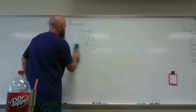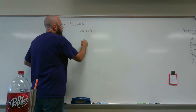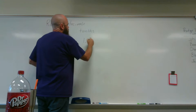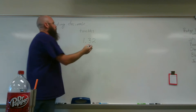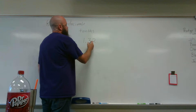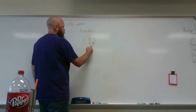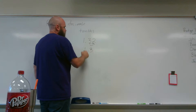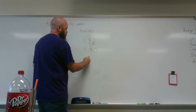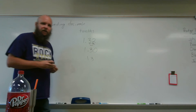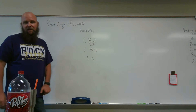Let's do another one to the tenths place. One and thirty-two hundredths. Tenths place — three. Behind it is a two, so we don't add one more. Numbers in front stay the same, the numbers behind — zero is your name. Or you'd see it written as one and three-tenths.